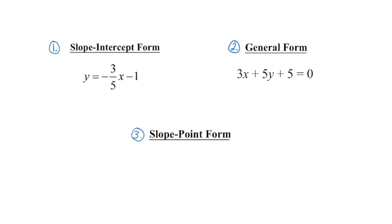Linear equations can be written three ways. Slope-intercept form is y equals mx plus b, and as the name suggests, it gives us the slope and the y-intercept. General form is the fancy form — it's equal to zero, a, b, and c are whole numbers, a is positive, and we line everything up in that order.